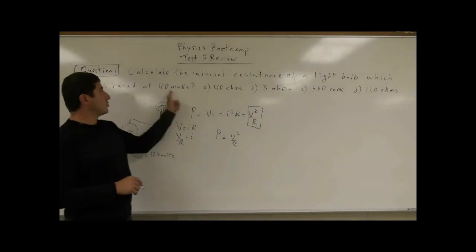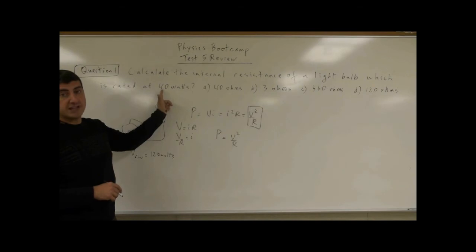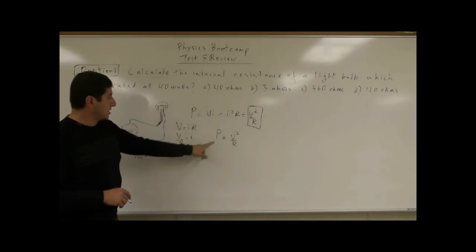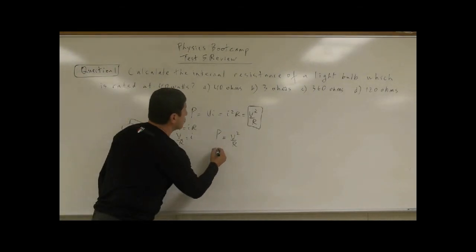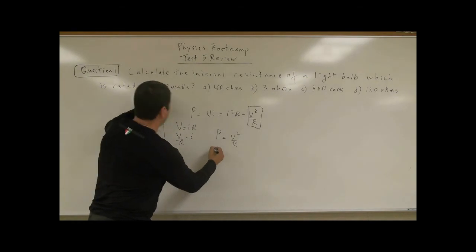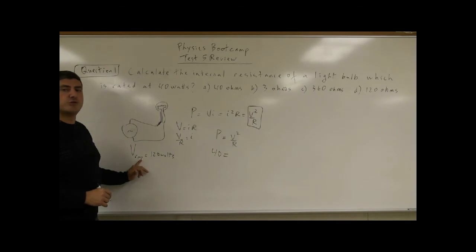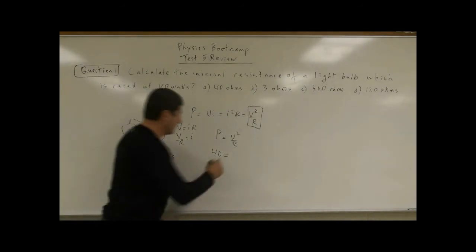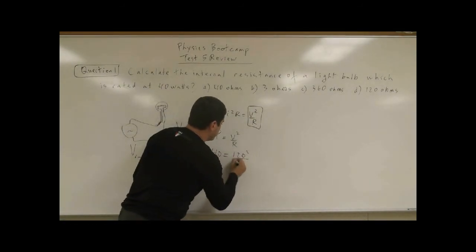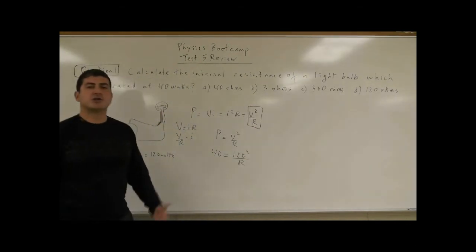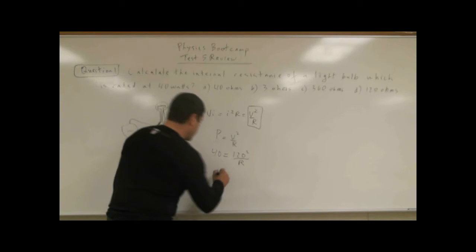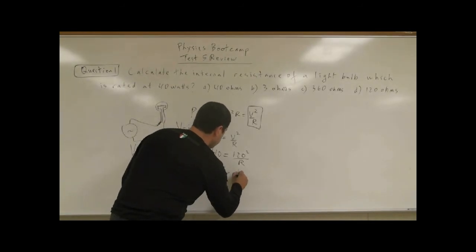Since we're doing this problem for United States rating, we're going to put the power equals 40 watts. And the voltage, we're going to put the root mean square voltage for AC, 120 - so 120² over R. Now we're going to solve for the internal resistance of that light bulb. So R equals 120² over 40.